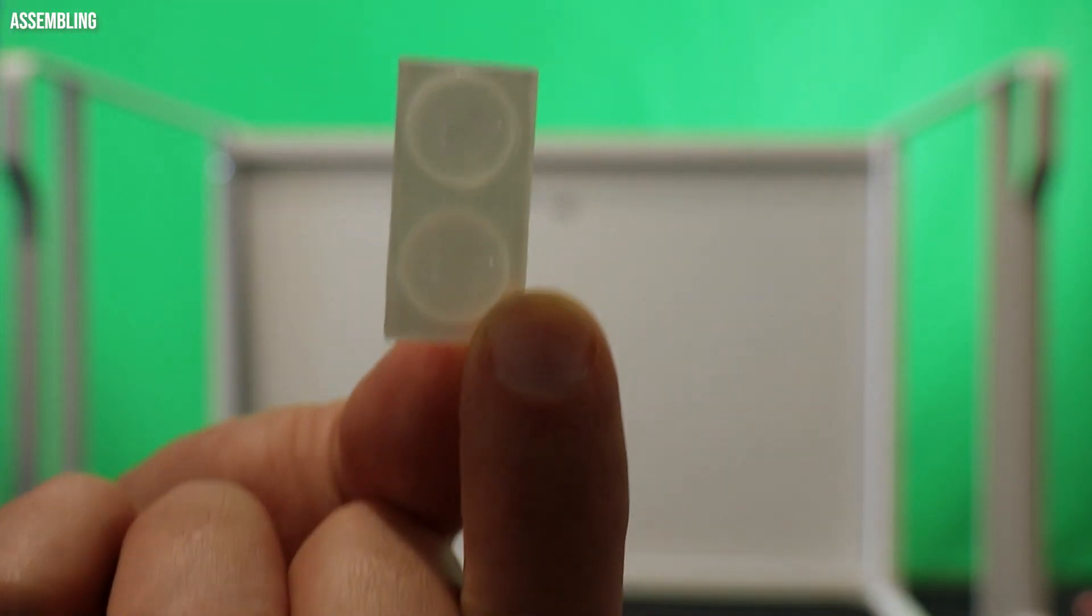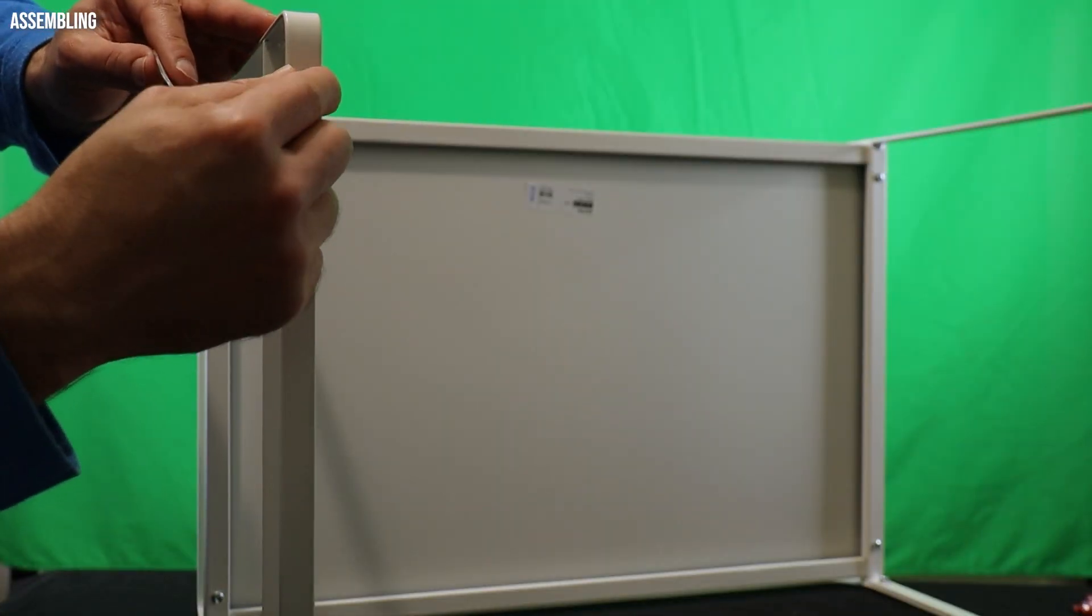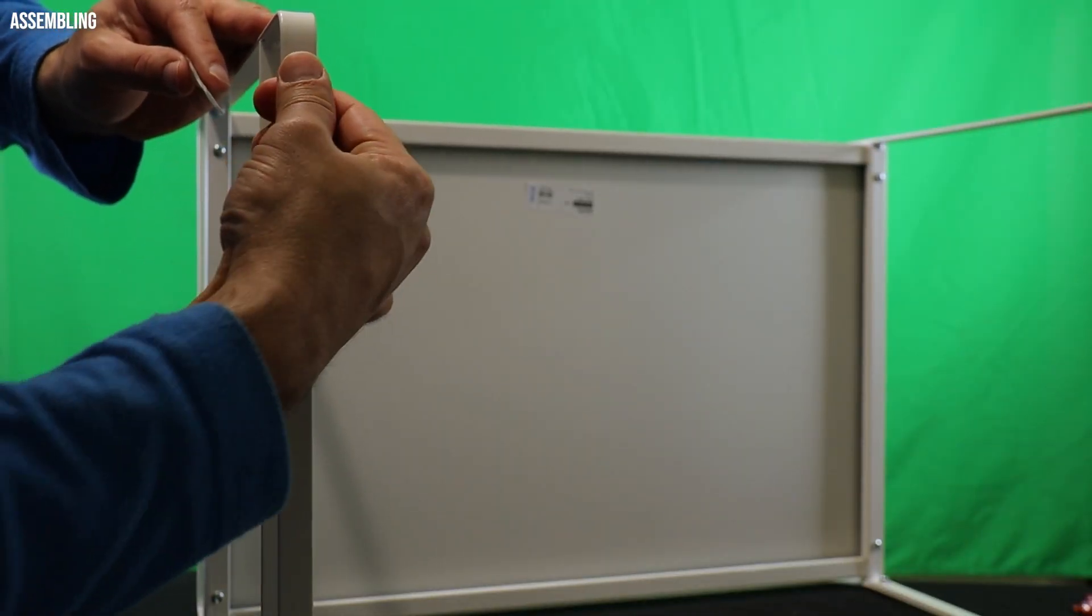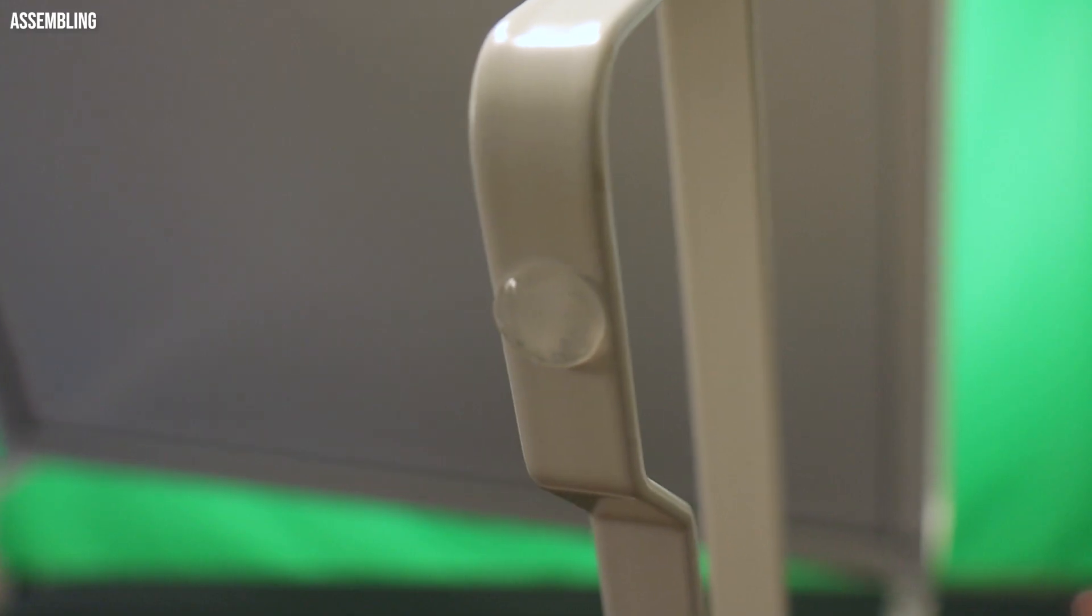These anti-slip stickers are essential for the Avsteg's stability. Once they are attached properly, it will stand firmly.